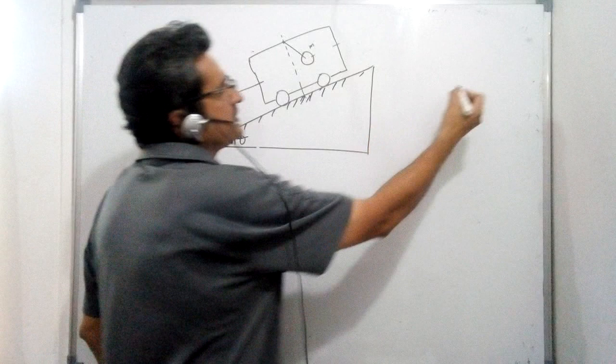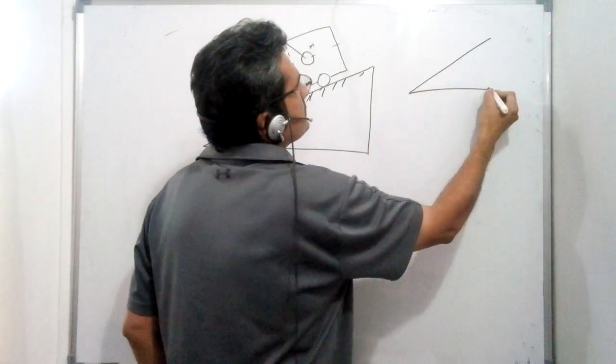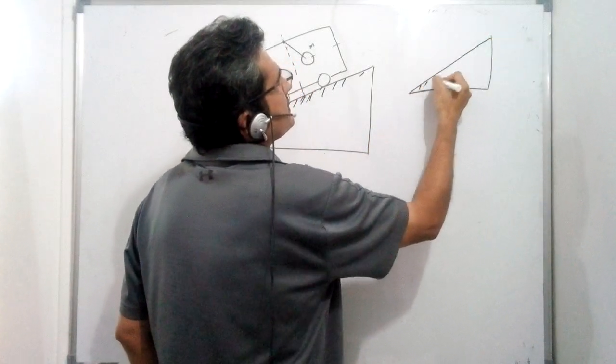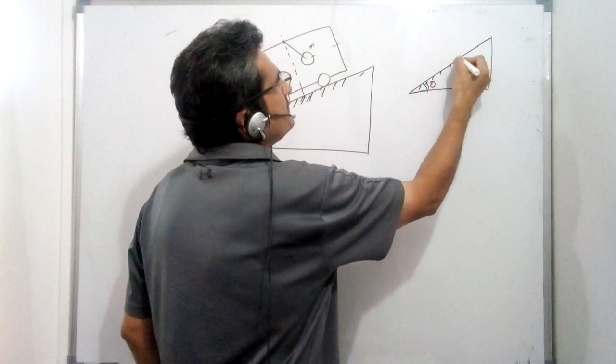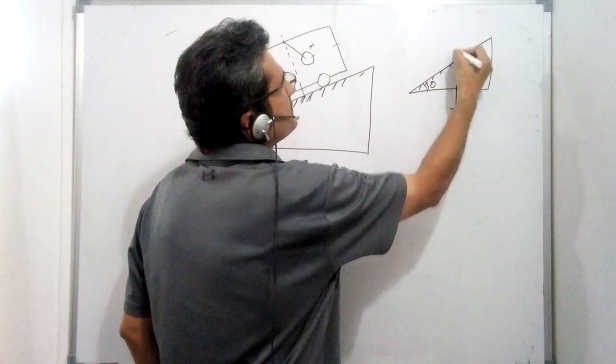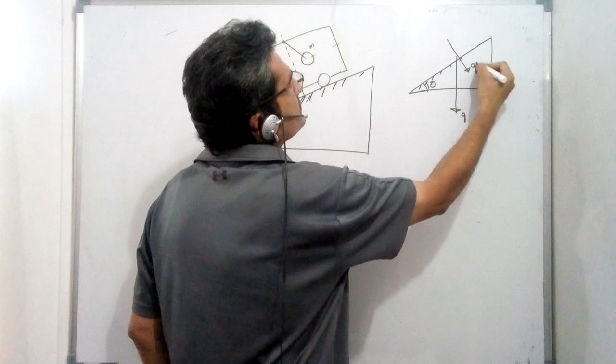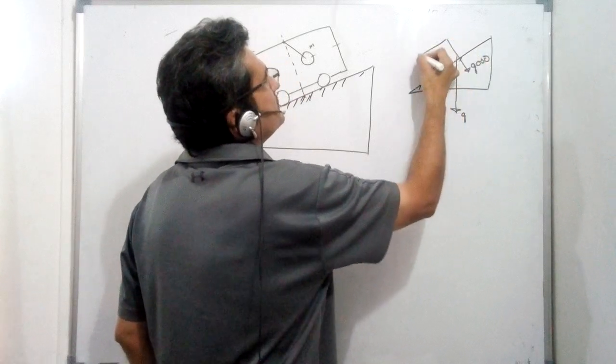Along the inclined plane, if this is theta, the gravity which is G downwards can be resolved into two components: one is G cos theta and another is G sin theta.